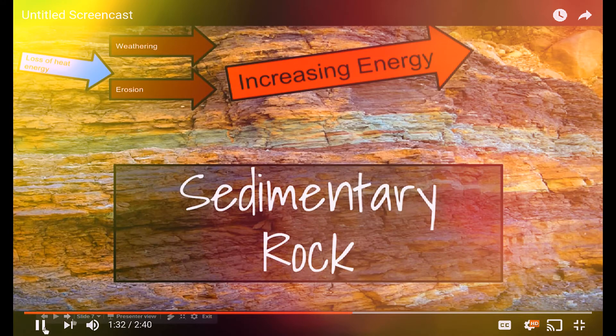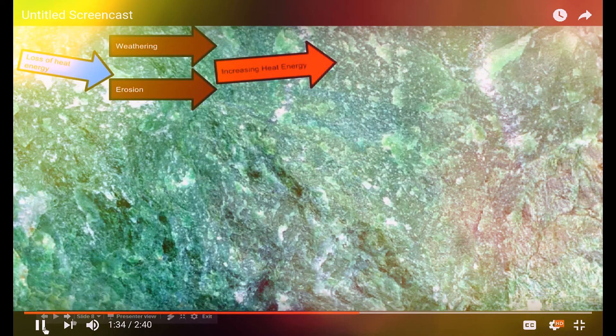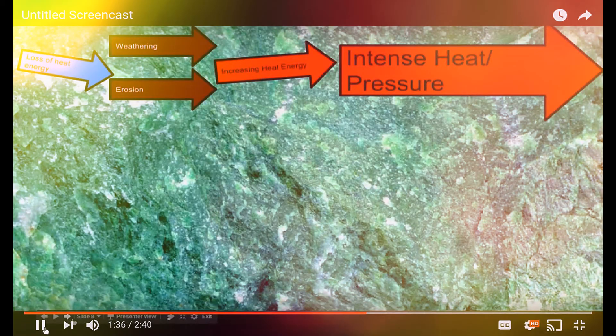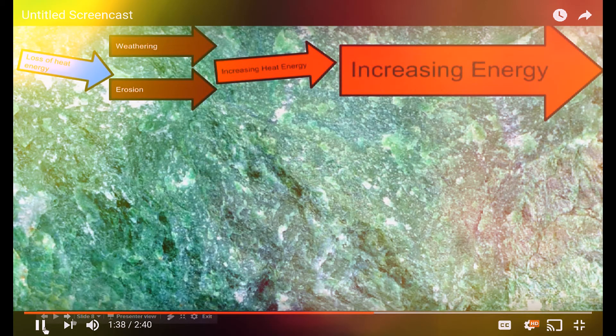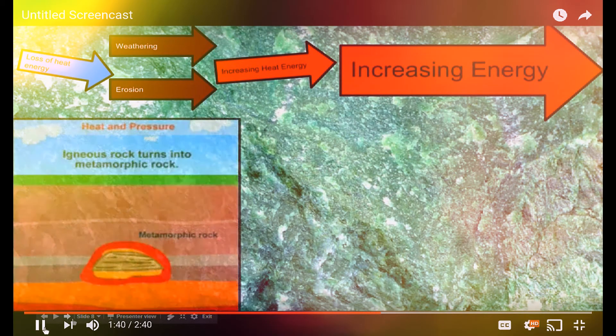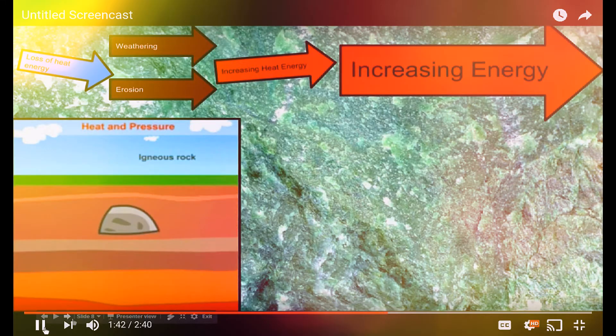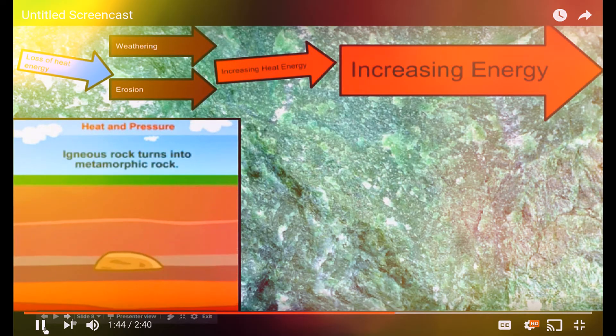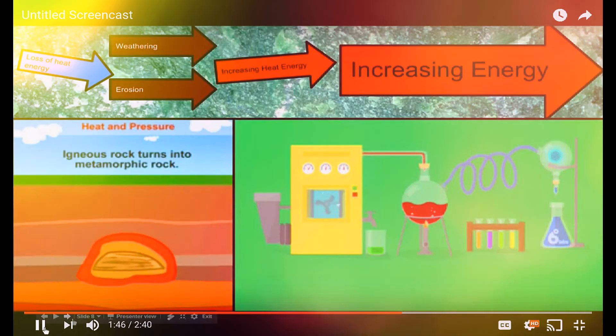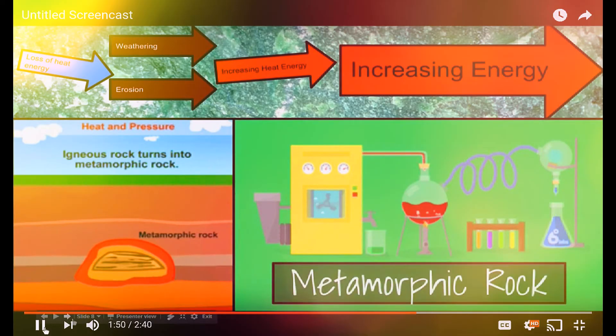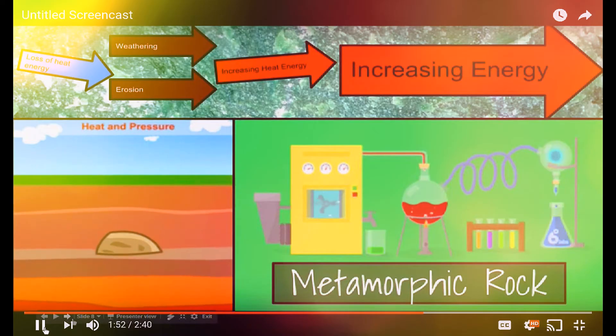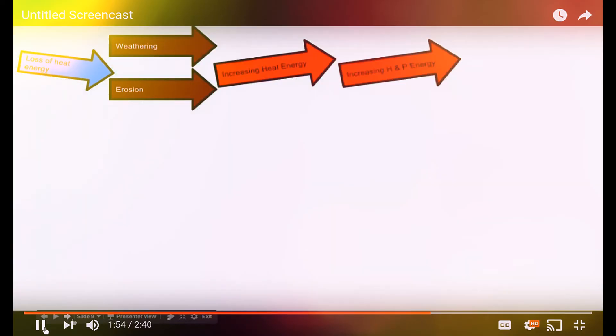If we continue to add more intense heat and pressure with increasing energy, we can actually then form a different kind of rock again. This is when any kind of stone will chemically change. Actually, the chemistry of the rock will change into a different kind of rock. That's why we use the word morph, which means to change, when we call these metamorphic rocks.